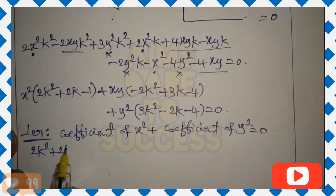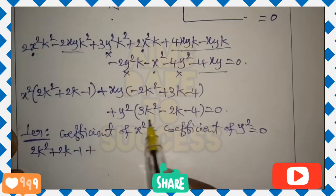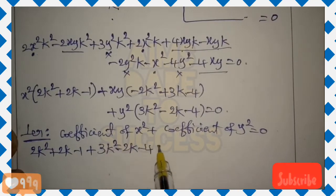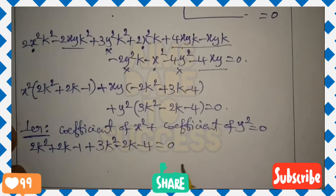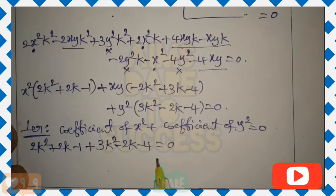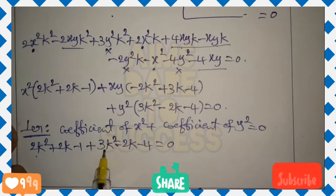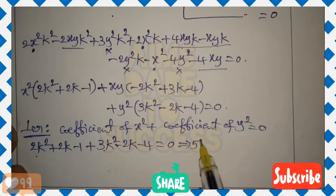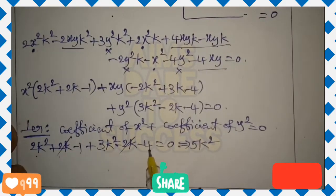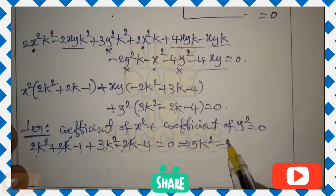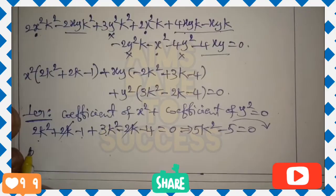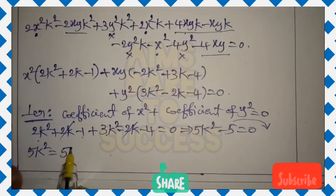So coefficient of x² is (2k² + 2k − 1) and coefficient of y² is (3k² − 2k − 4). Adding: 2k² + 2k − 1 + 3k² − 2k − 4 = 0. Simplifying: 5k² + (2k − 2k) + (−1 − 4) = 0, so 5k² − 5 = 0.